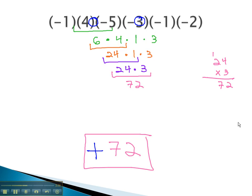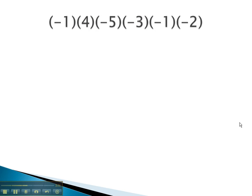Let's try one more example where we multiply a bunch of integers together: negative one times four times negative five times negative three times negative one times negative two. Is the answer positive or negative? Well, we see one, two, three, four, five negatives. That's an odd number of negatives, so we know our final answer is negative.